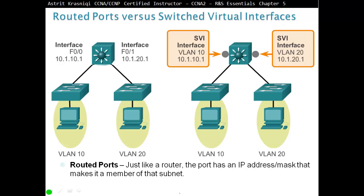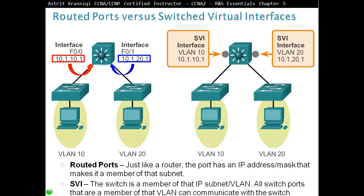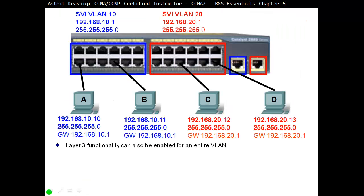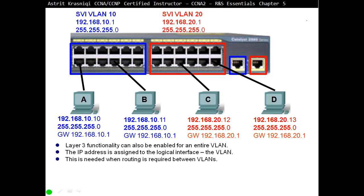Routed Ports are just like a router — the port has an IP address and mask, making it a member of that subnet. These are physical ports. Virtual ports exist in RAM; the switch becomes a member of an IP subnet for that VLAN, and all switch ports in that VLAN can communicate with each other. So there are two interface types: Routed Ports (physical interfaces on the switch converted to Layer 3) and Switch Virtual Interfaces (logical Layer 3 interfaces). Layer 3 functionality can be enabled for an entire VLAN by assigning an IP address to the logical VLAN interface, which is needed when routing is required between VLANs.